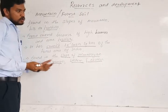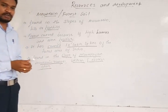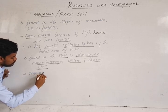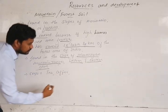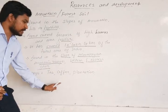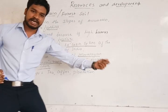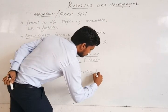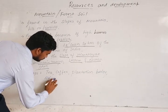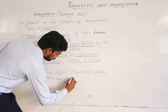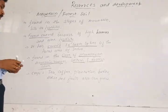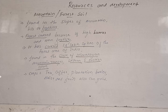The crops which we can grow in mountain or forest soil include tea, coffee, and other plantation crops — rubber and many other things can be grown. Along with these, barley, maize, fruits and vegetables can also be grown in this soil.